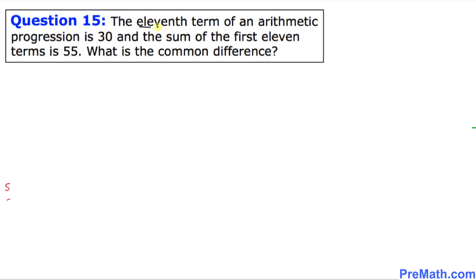Over here it says the 11th term, I'm going to call it A of 11, is 30. So we know that A of 11 equals 30. What else we've been given? We've been given the sum of the first 11 terms. That means S of 11 equals 55. So we have N equal to 11 terms and we need to find the common difference D.